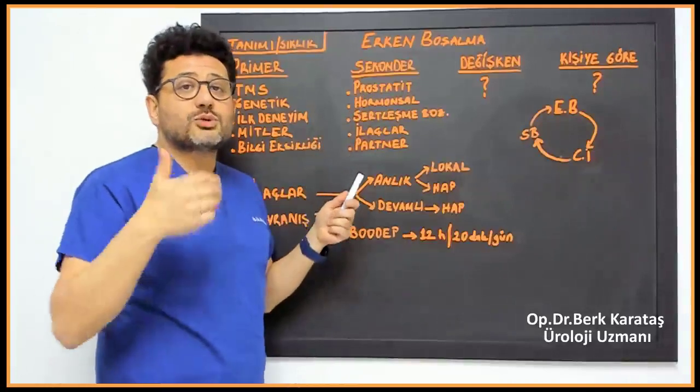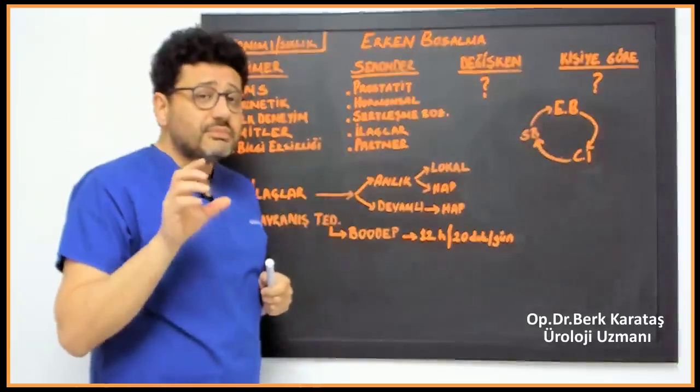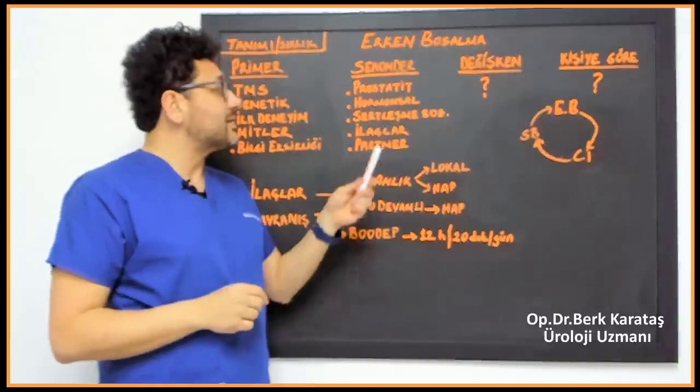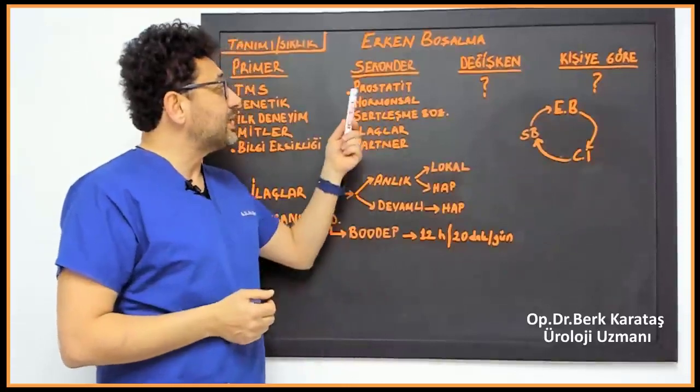But if it has started recently in the last 5 to 6 months, the most common reason is prostate inflammation, which is the most common inflammation in men between the ages of 20 to 40. Inflammation of the prostate can cause premature ejaculation.